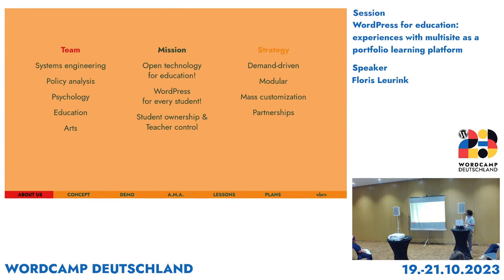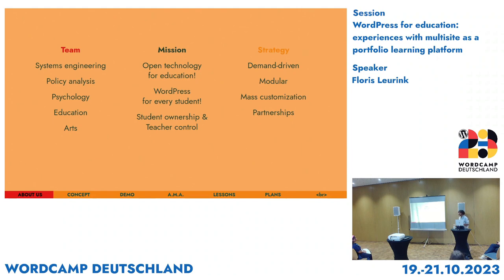Our mission is, first and foremost, to use open technology in education. It's a public endeavor using public money, and open technology is underutilized but out there for the taking. We translated this into a concrete goal: give every student in the Netherlands — in Europe, in the world — their own WordPress site. We started in the Netherlands.